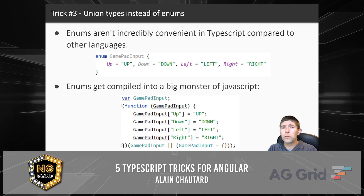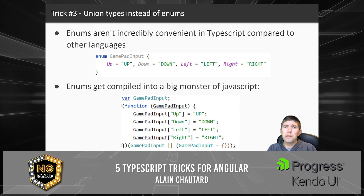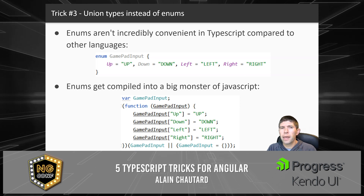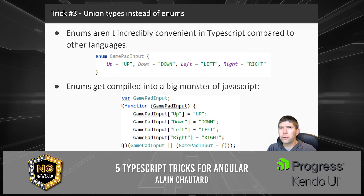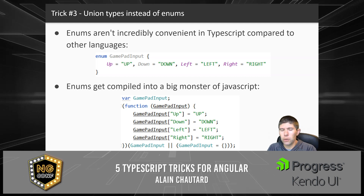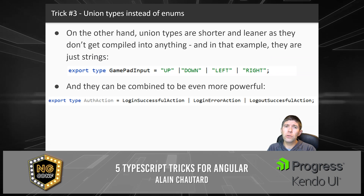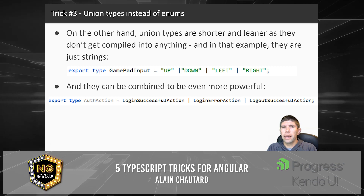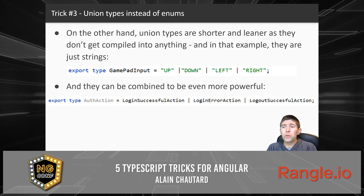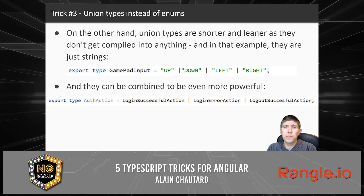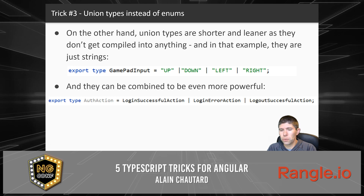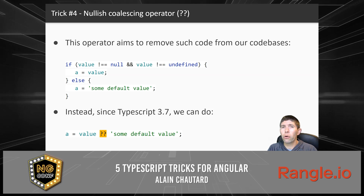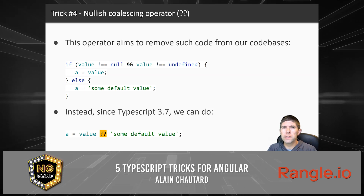Trick number three is to use union types instead of enums. Enums in TypeScript don't have that many features compared to other languages, and they end up being compiled to a big chunk of JavaScript that takes up space in your code. Union types, on the other hand, are much shorter and leaner — they are just strings in this example and they don't get compiled into anything. You can also combine them with more complex types for additional flexibility.